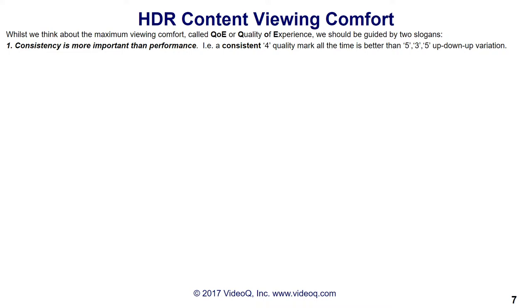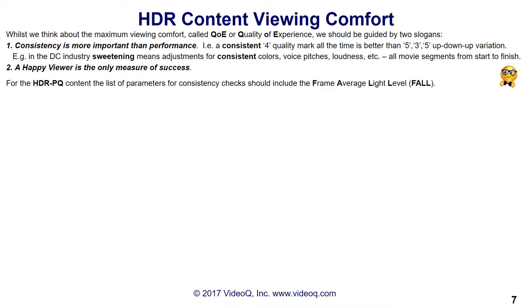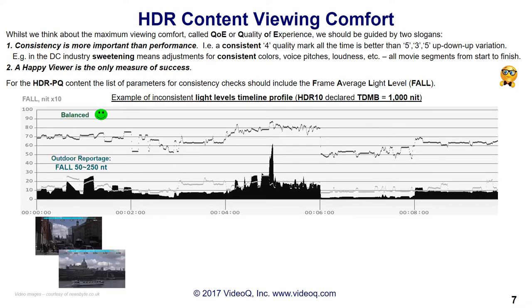We should be guided by two slogans. Number one: consistency is more important than performance — meaning a consistent quality mark of 4 for all segments is better than a 5, followed by a 3, then a 4, then a 5, and so on. In filmmaker's language, sweetening means getting consistent colors, voice pitch, loudness, and so on, for all of a movie's segments from start to finish. Number two: a happy viewer is the only measure of success.